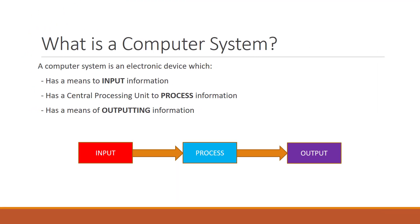So what is a computer system? Simply, a computer system is an electronic device that has a method of inputting information or data, has a microprocessor to process this information or data, and has a method of outputting this information or data so we as humans can understand it.